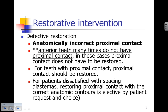When teeth have proximal contact, proximal contact should be restored. We can restore proximal contact with anatomically correct contours for aesthetic reasons — this is elective by the patient. In many cases, the first recommendation for patients unhappy with spacing, if the spacing is large enough, is orthodontic treatment and then retaining the teeth once they're moved into the new aligned position.